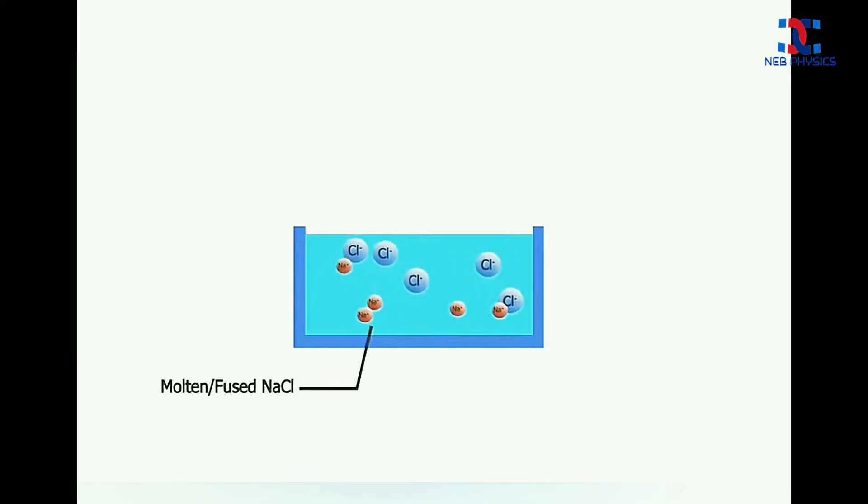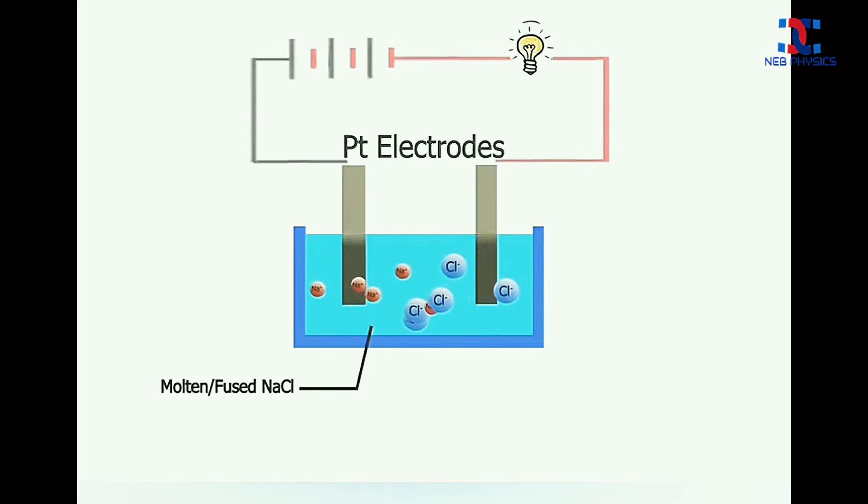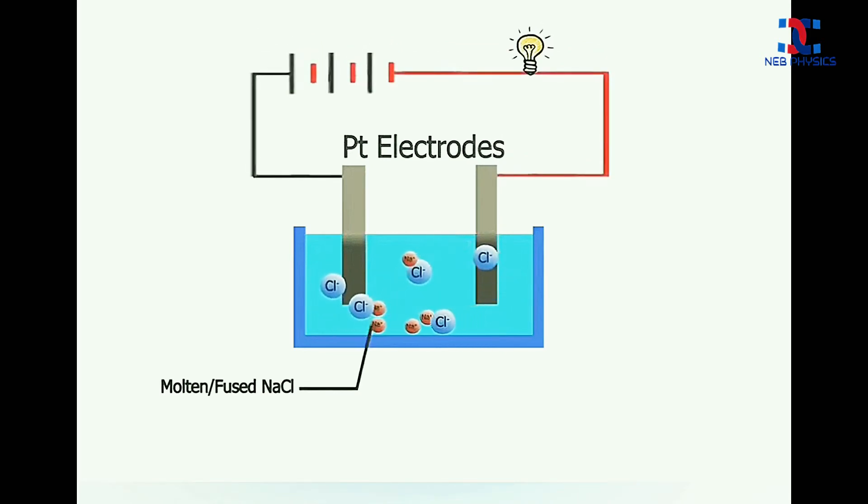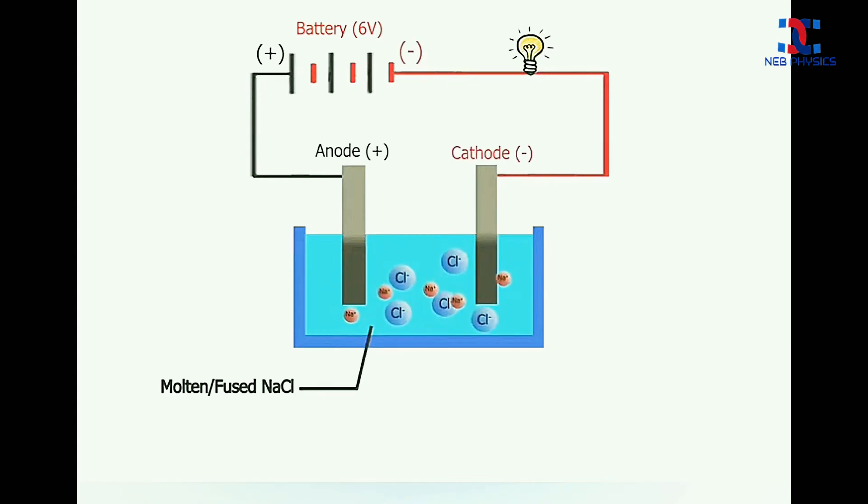In a molten state or in the solution, the electrolyte like sodium chloride breaks down into oppositely charged ions. The negatively charged anions are attracted towards the positively charged anode and the positively charged cations are attracted towards the negatively charged cathode. This process continues with the remaining molecules of sodium chloride and the electric current is set up in the solution.